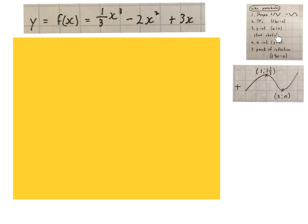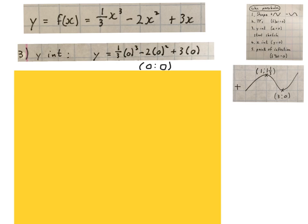Seeing that we have our shape and our turning points now, we go for the y-intercept by making x 0 in the original equation. Then we get the coordinate 0 and 0. That is where it is going to go through the y-axis.